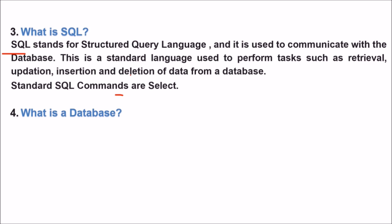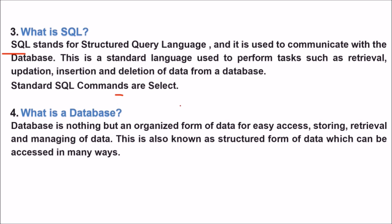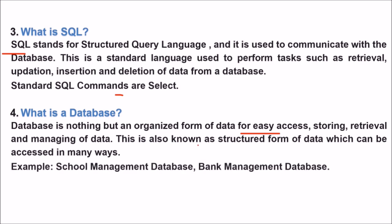What is a database? A database is nothing but an organized form of data for easy access. If you are able to organize data in such a way that you can access, store, retrieve, and manage it easily, this is a database. It is also known as a structured form of data which can be accessed in many ways — like a school management database or a bank management database.